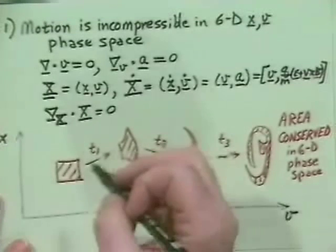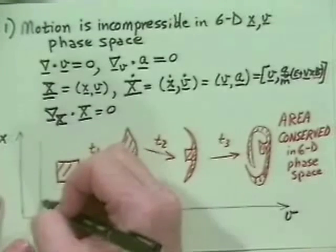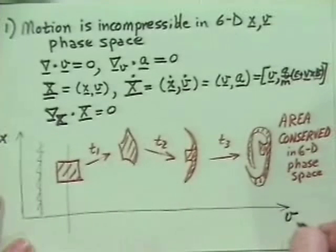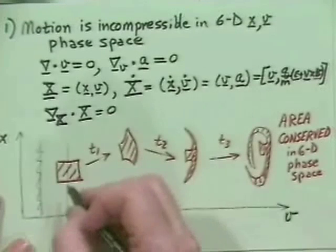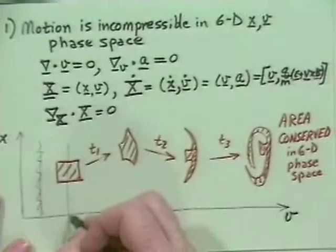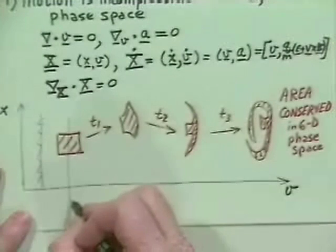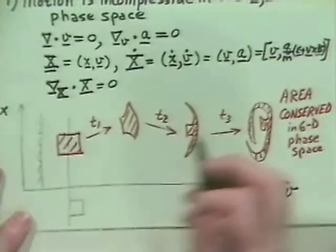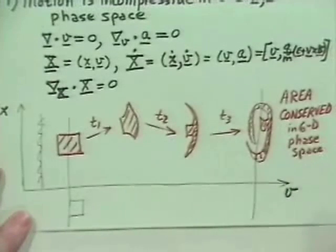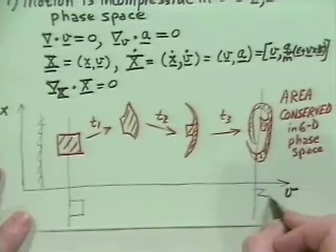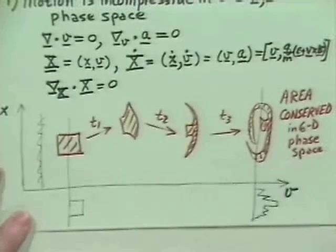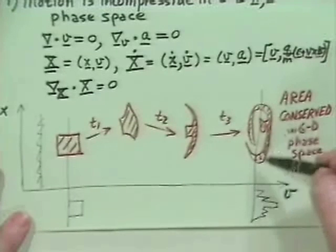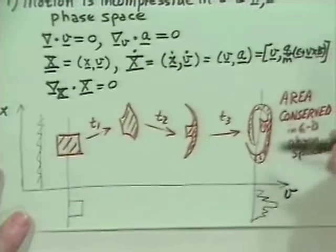Now suppose I came along here and wanted to ask what the density was as a function of real space. Back here, if I plotted the density as a function of x, it would just be a block, because all the particles lie between this point and that point. But when I get over here and ask what's the density look like, it's getting rather irregular. It can have a heck of a lot of irregularity to it. Now is that physically real?